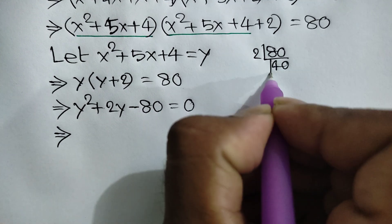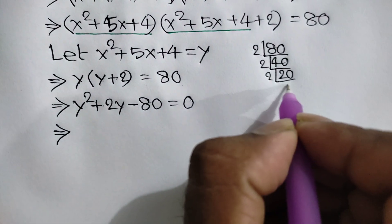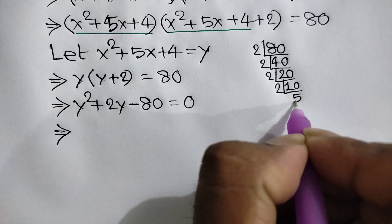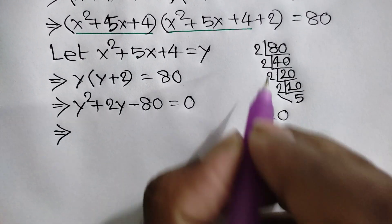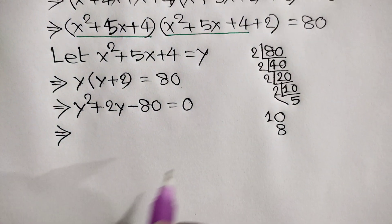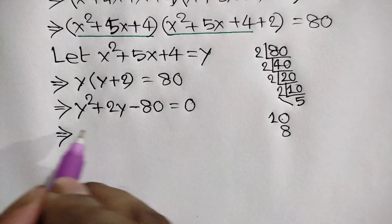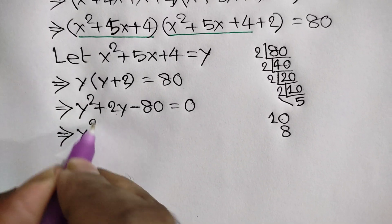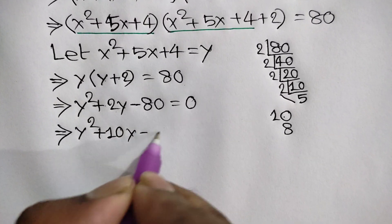To factorize, we note that 80 = 2 × 2 × 2 × 2 × 5, giving us factor pairs 10 and 8. Since 10 − 8 = 2, we can use the middle term breaking rule: y² + 10y − 8y − 80 = 0.